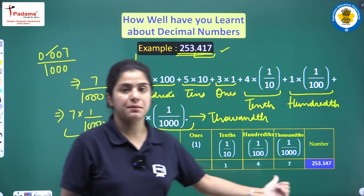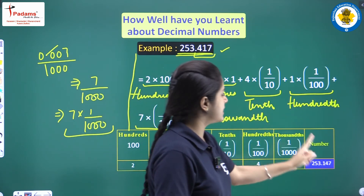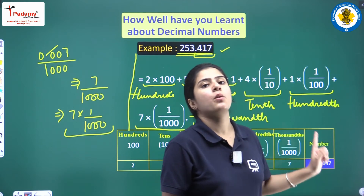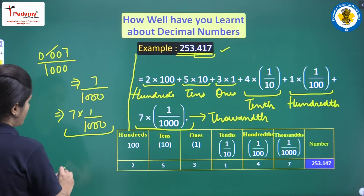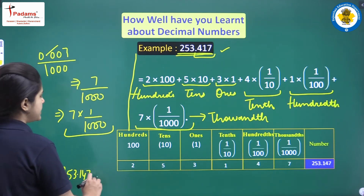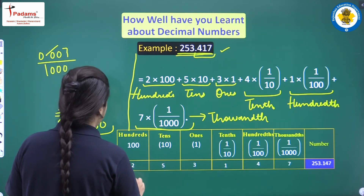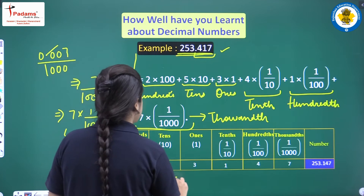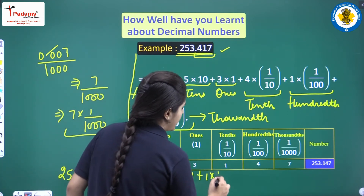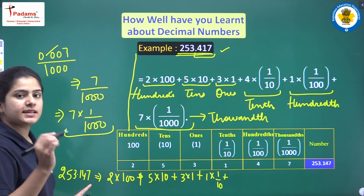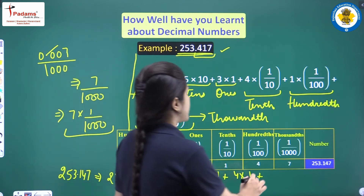Now we'll be studying the expansion in the form of a table. The number is 253.147 — note it is 147, not 417, so the expansion is different. 253.147 can be written as 2 into 100 plus 5 into 10 plus 3 into 1, then the first digit after the decimal is 1, so 1 into 1 upon 10; the second digit is 4, so 4 into 1 upon 100; and the third digit is 7, so 7 into 1 upon 1000.